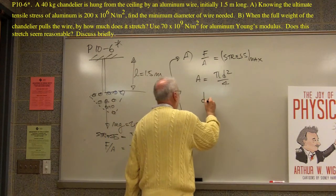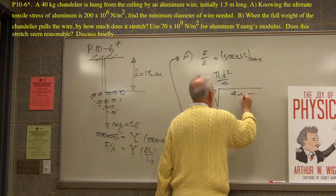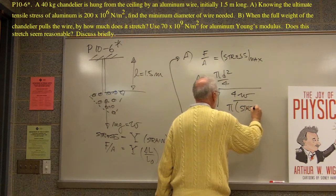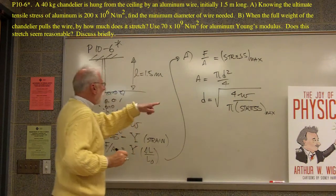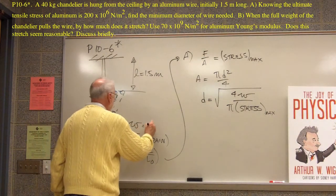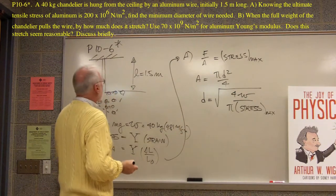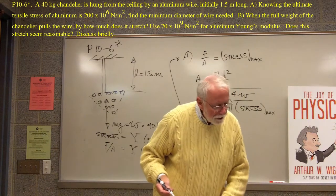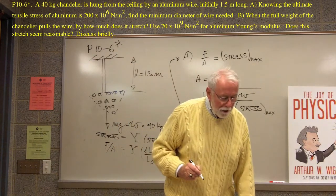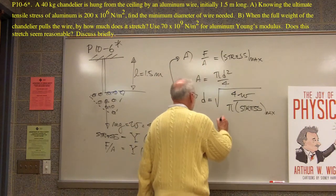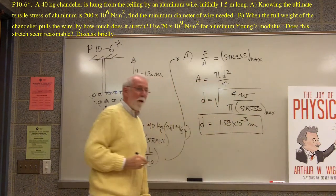If we do, we find that diameter d is the square root of 4 times the weight over pi times the maximum stress. And so, what does that make altogether? Well, do we know the weight? Yeah, the weight is 40 kilograms times 9.81 meters per second squared. So, we know that. And the maximum stress, he tells us, is 200 times 10 to the 6 newtons per square meter. So, we know all this stuff. So, we can then calculate d and find out what d is. And it turns out that d is 1.58 times 10 to the minus 3 meters.